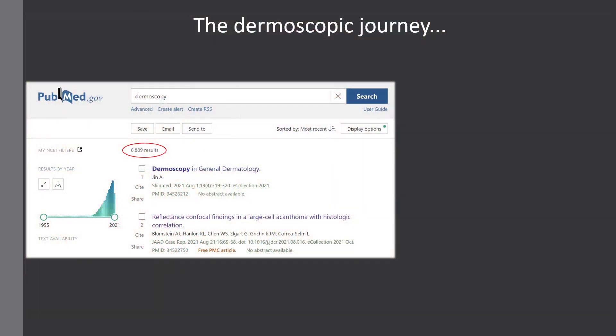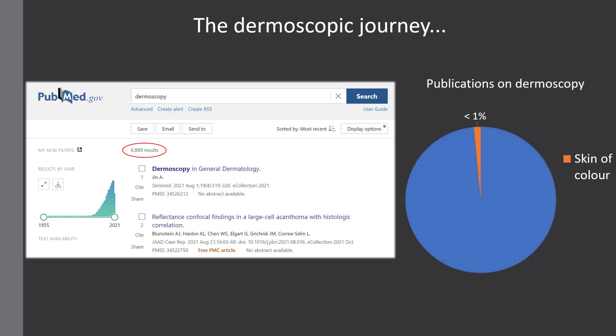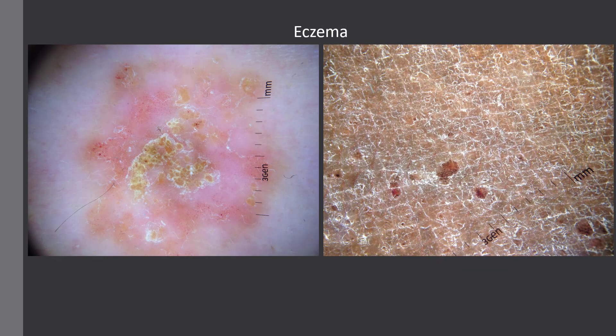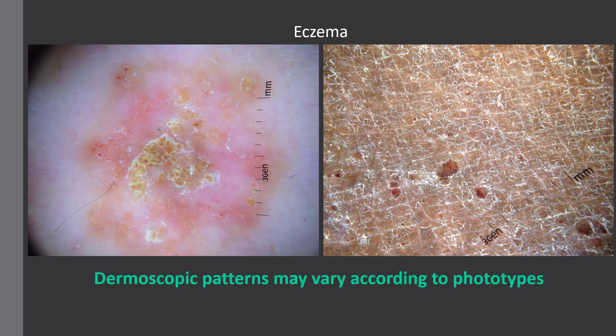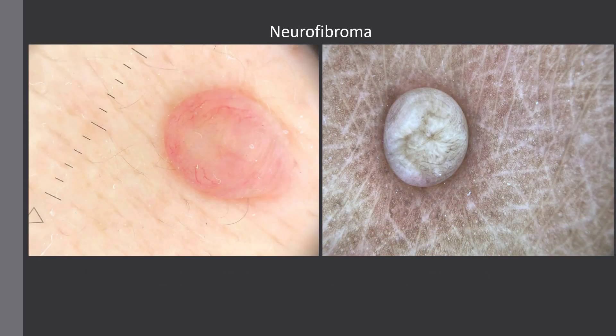Till now, many papers on this topic have been published in the literature, but there is a big limitation: just less than 1% of the papers on dermoscopy deal with skin of color. This is a big limitation because the same condition may display different findings according to the skin phototype, and this is valid for both inflammatory conditions and tumoral conditions.